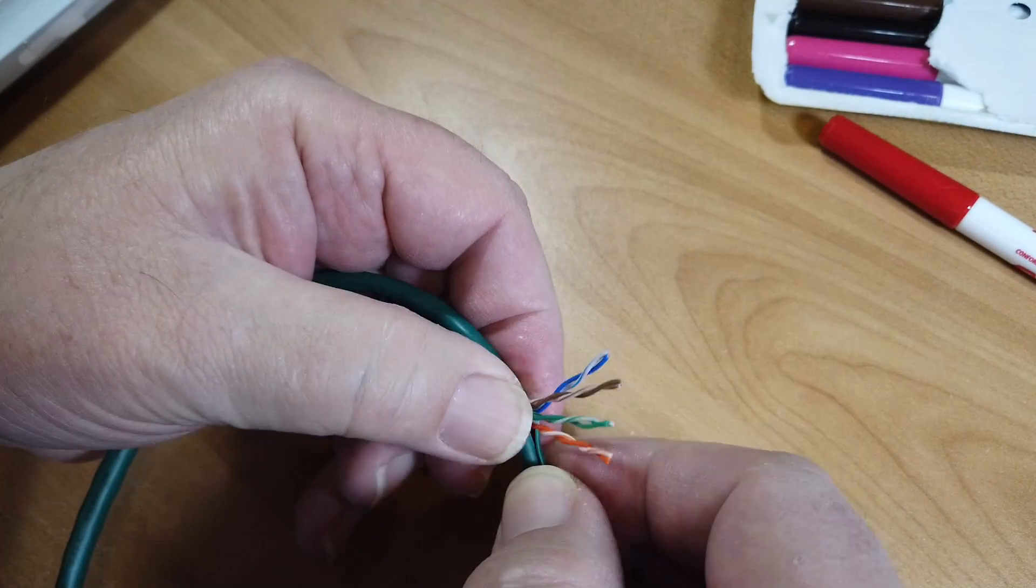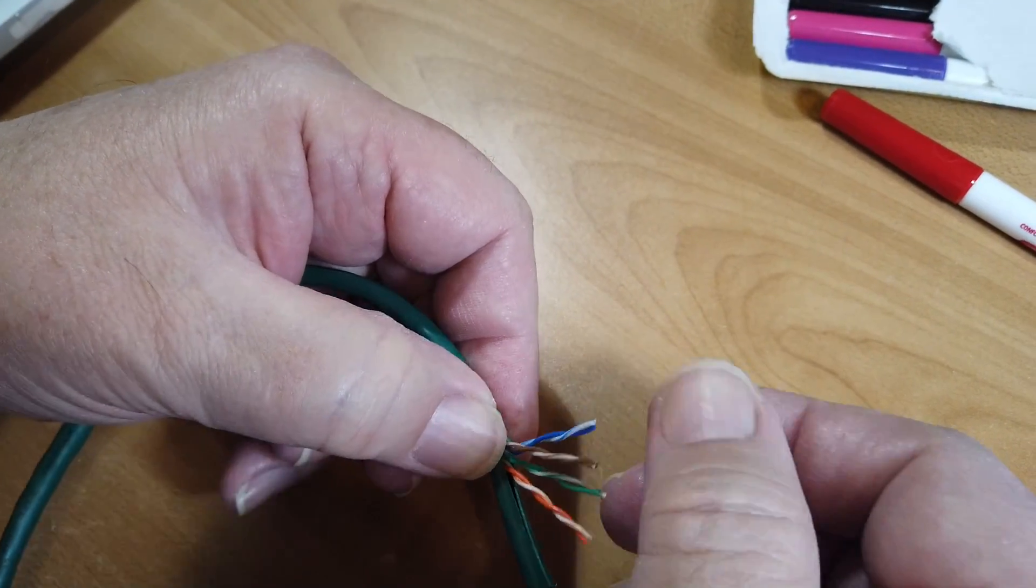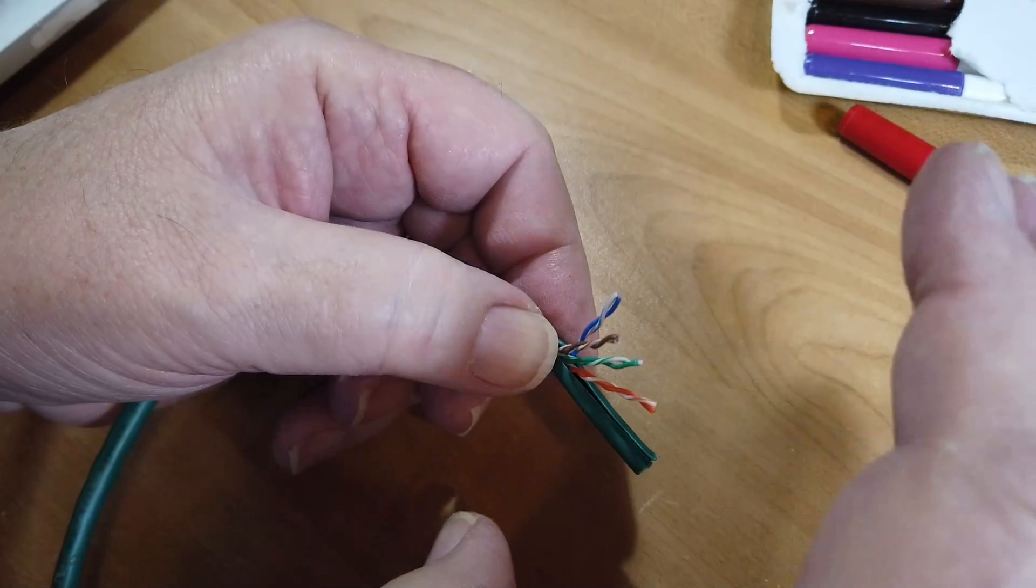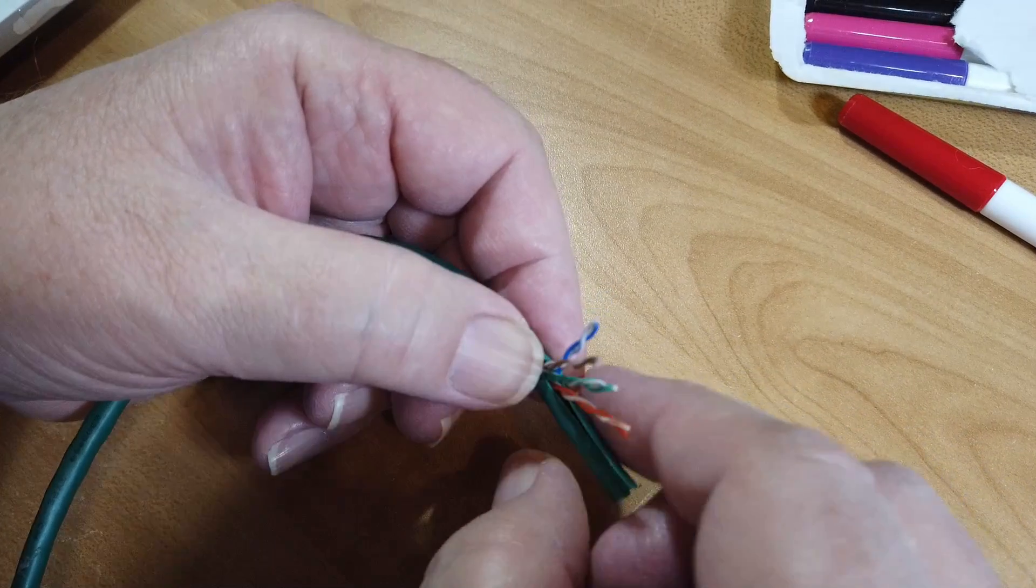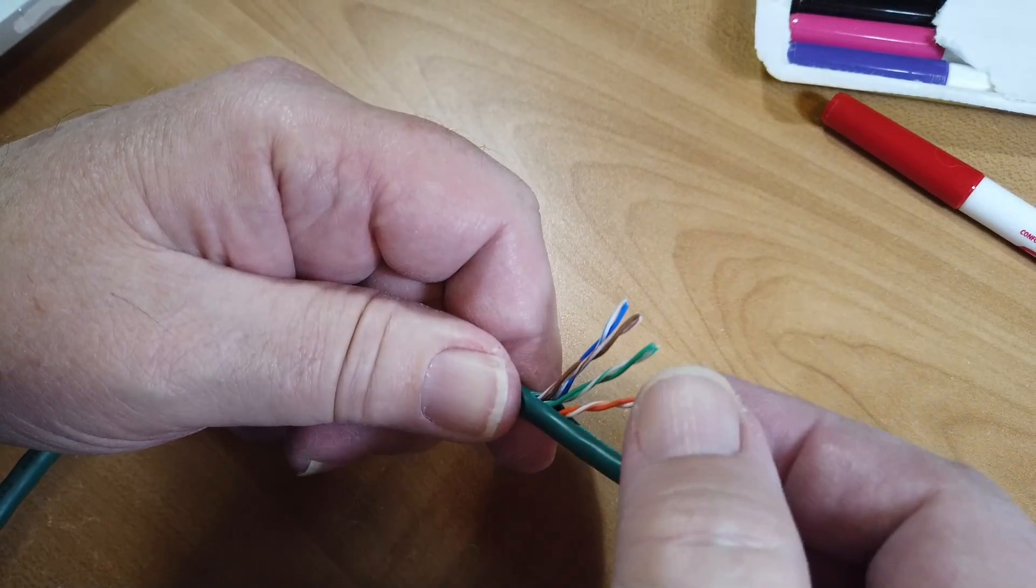Okay, now notice that they are fairly tightly wound around each other. This gives them an impedance, a characteristic impedance. Each of these are transmission lines of on the order of 100 or so ohms.